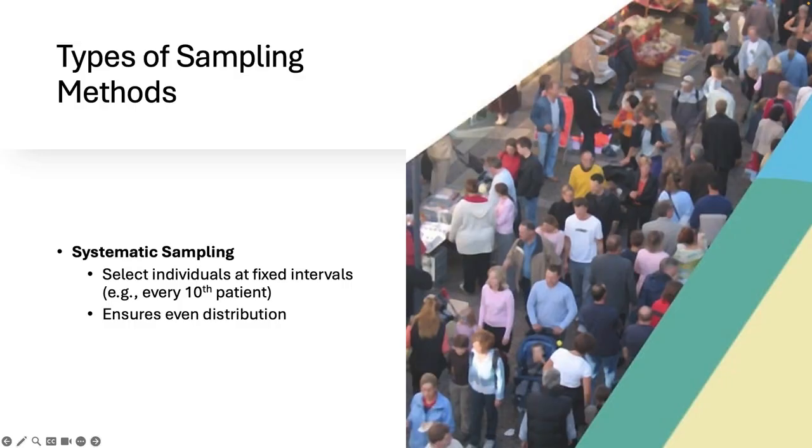It's really easy to do and gives you a nice spread across the list. But there's a catch. If there's a hidden pattern in your list, say like the tenth person always being from a certain department or demographic, whatever it might be, you could introduce bias without even realizing it. So just be careful with that. Now a lot of quality control studies use this method like inspecting every tenth item on assembly line. So you can think about it like that.